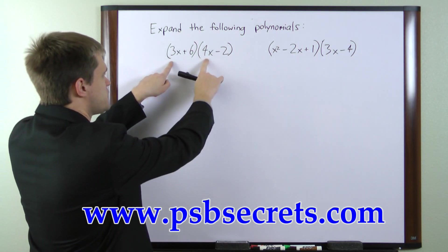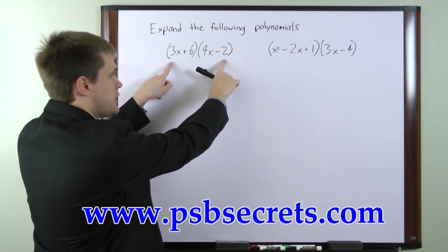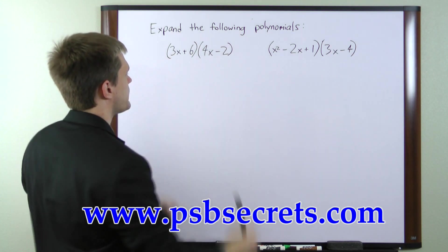So you would multiply the first pair, the outside pair, the inside pair, and then the last pair.